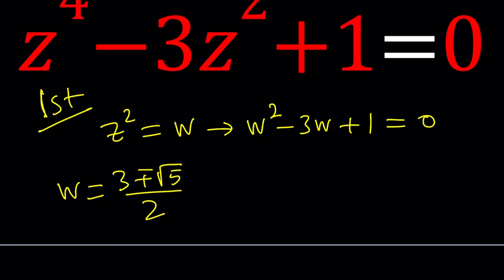So w from here by using the quadratic formula is going to be 3 plus minus root 5 over 2. Now you've got to remember w is z squared, so to find z from here I'm supposed to square root my expression.